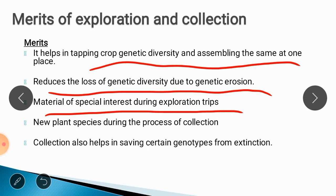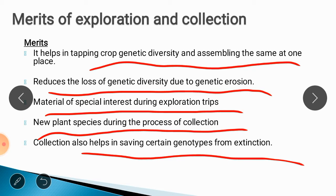New plant species during the process of collection can also be obtained — there are chances of getting a completely new plant species not already present in our germplasm or gene banks. Collection also helps in saving certain genotypes from extinction — those genotypes that would become extinct in coming years can be saved.